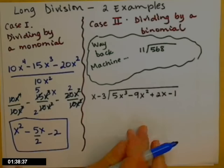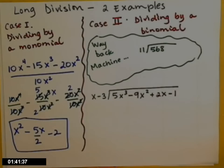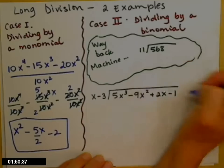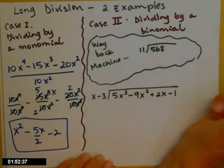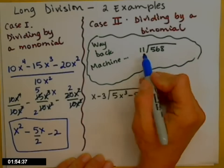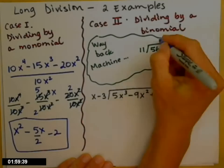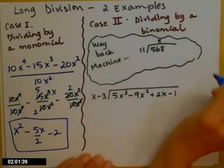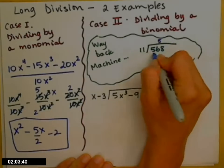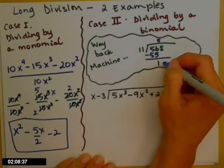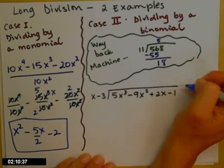Before I start the second example, I need you to get in the Wayback Machine and set it for around second or third grade, when you learned how to long divide with numbers. We're going to use that same technique when we divide by a binomial. So — 11 times what to get close to 56? You say 5, write that up there, multiply, subtract, and bring down.